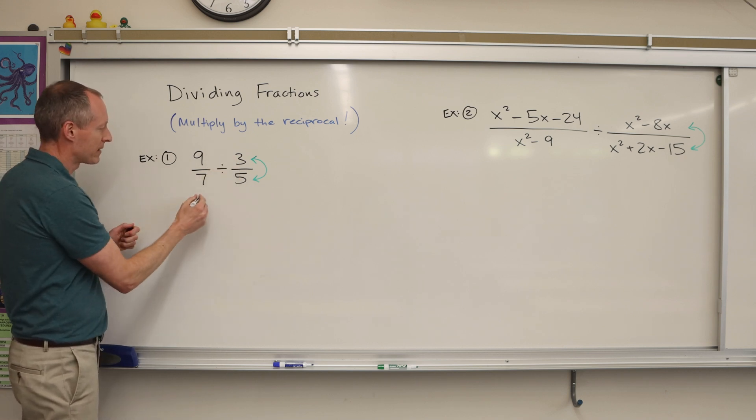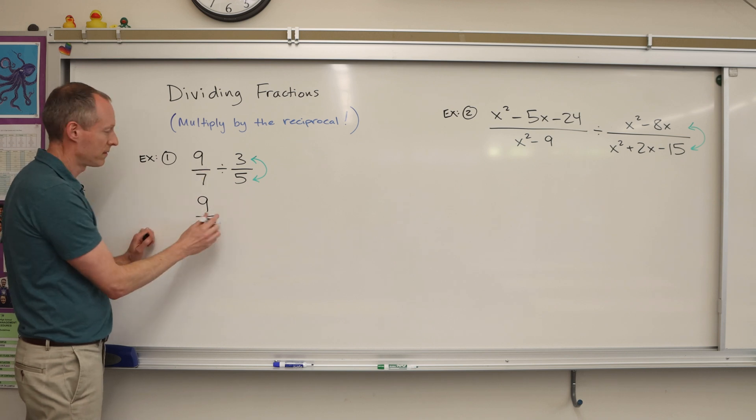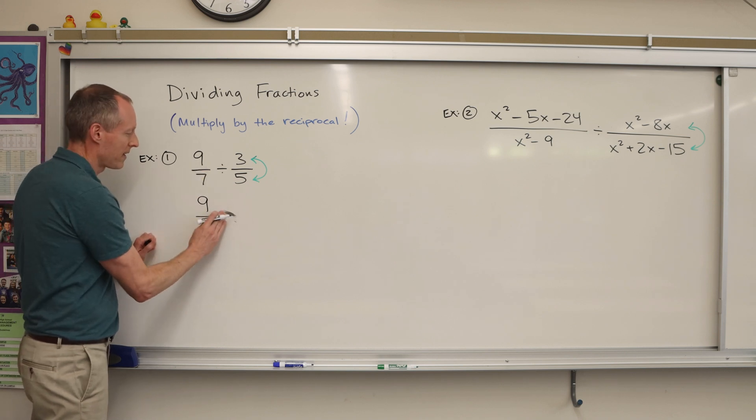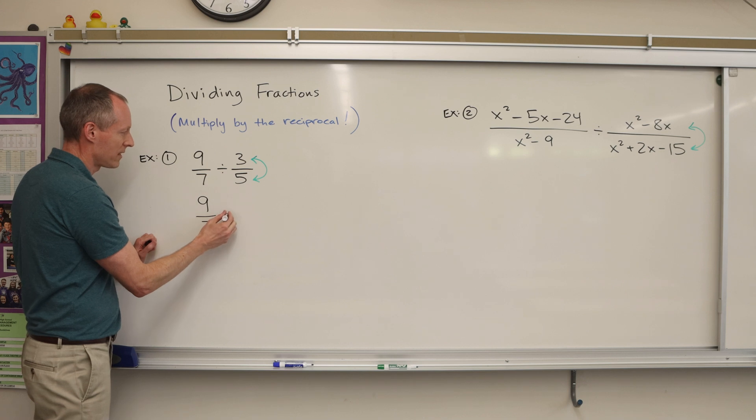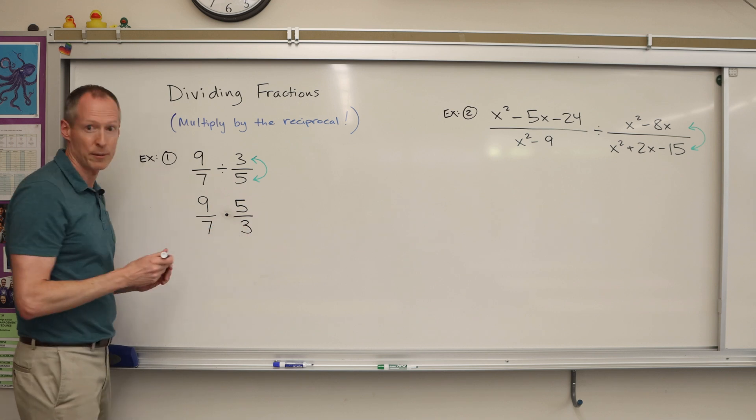I'll get to my memory device in just a second, but here's how you do this. Keep the first fraction as it is and then change division to multiplication and flip around the second one.